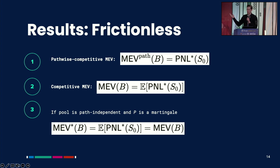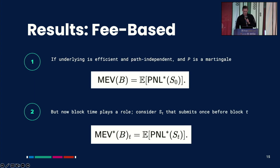Our results in the frictionless case: the Pathwise Competitive MEV is simply equal to the uncontested PNL of the simple arbitrage strategy. We can also prove that the Competitive MEV — mostly relevant in the fee case — is equal to the expected PNL of the simple arbitrage strategy. And finally, if the pool is path independent and price is fully a martingale, so we have no alpha about the price, then the MEV star — the non-competitive MEV — equals the Competitive MEV, which equals the expected uncontested PNL of the arbitrage strategy.